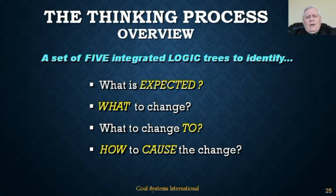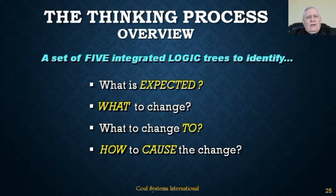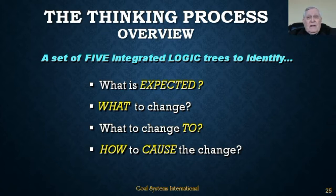The Logical Thinking Process at its most elemental is a set of five integrated logic trees designed to identify: first, what is expected of a given system — what performance standard is required; second, what to change if the system is not realizing that performance; third, what to change to — how should the system be reconfigured to achieve the desired performance it's not producing now; and finally, how to cause that change to happen — how do we execute the required change.